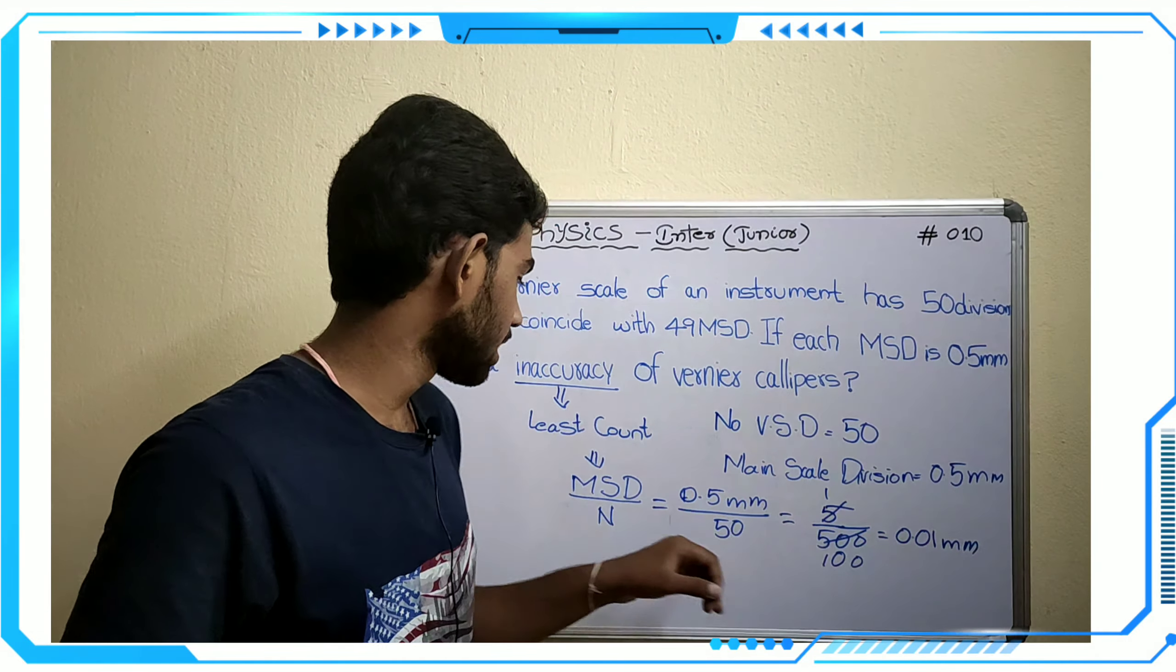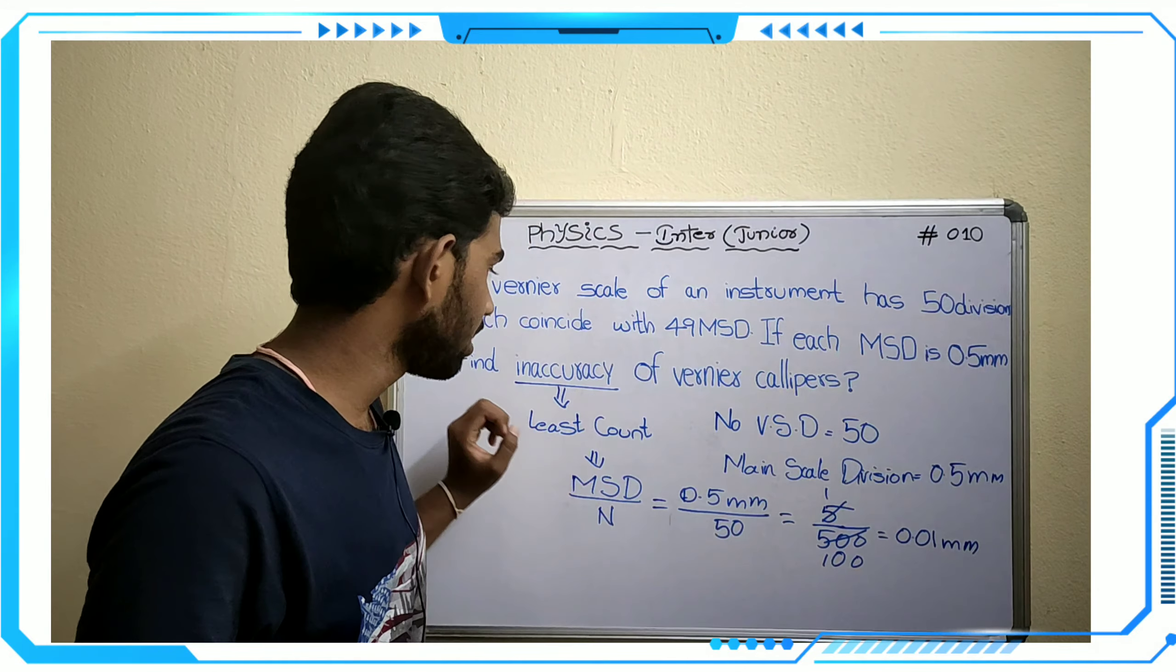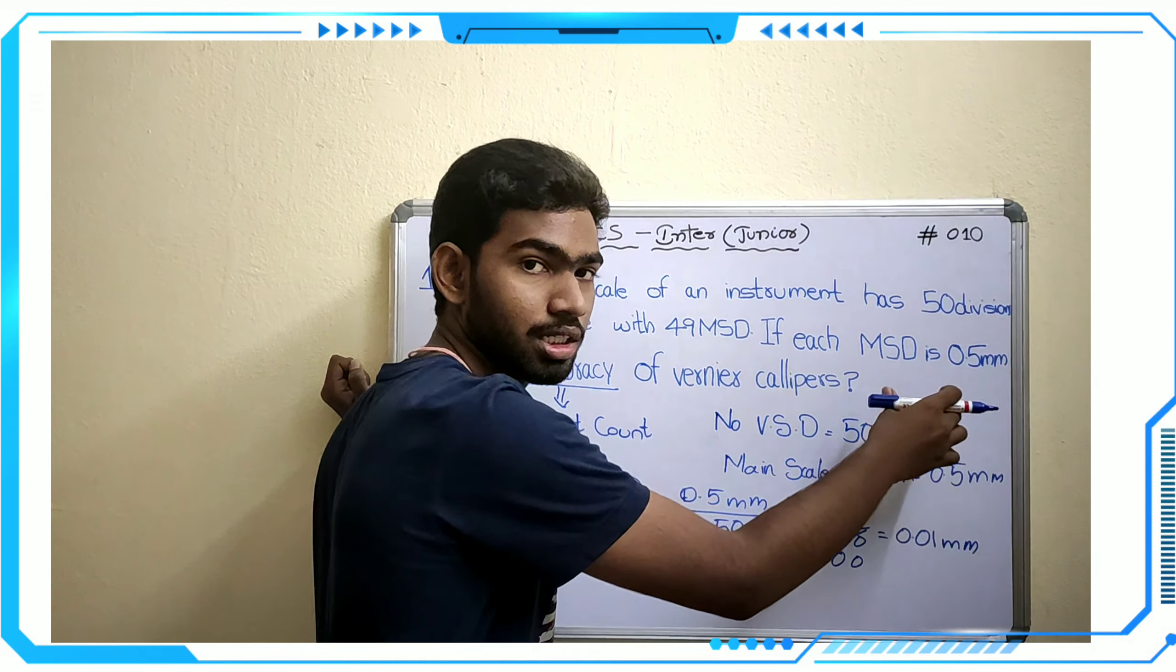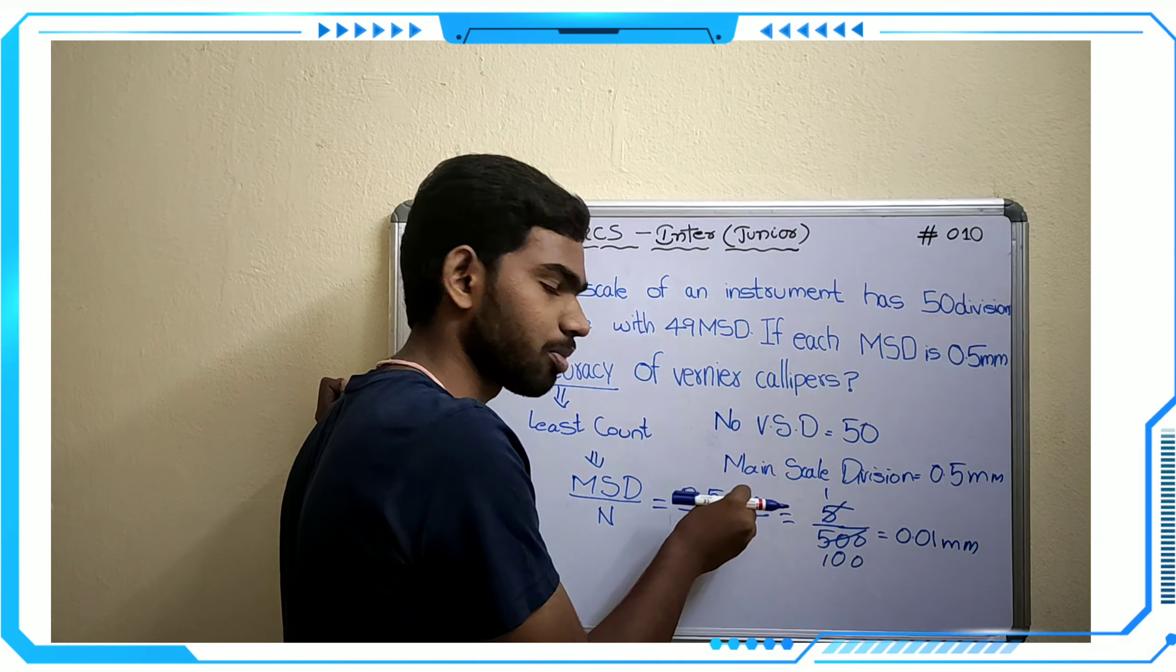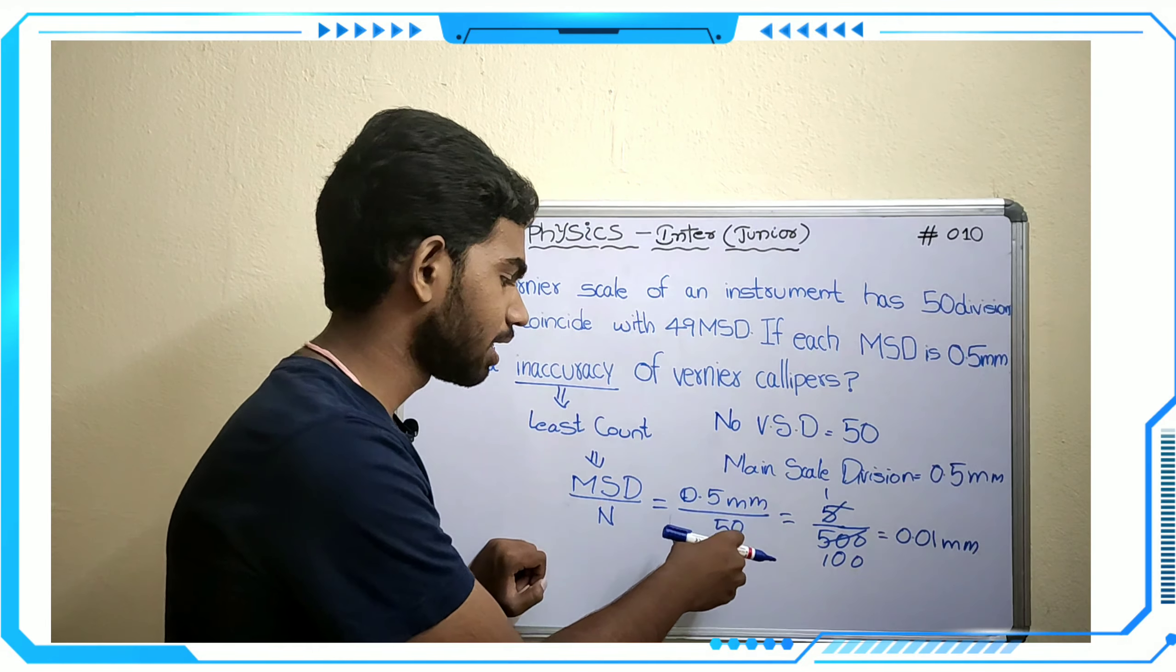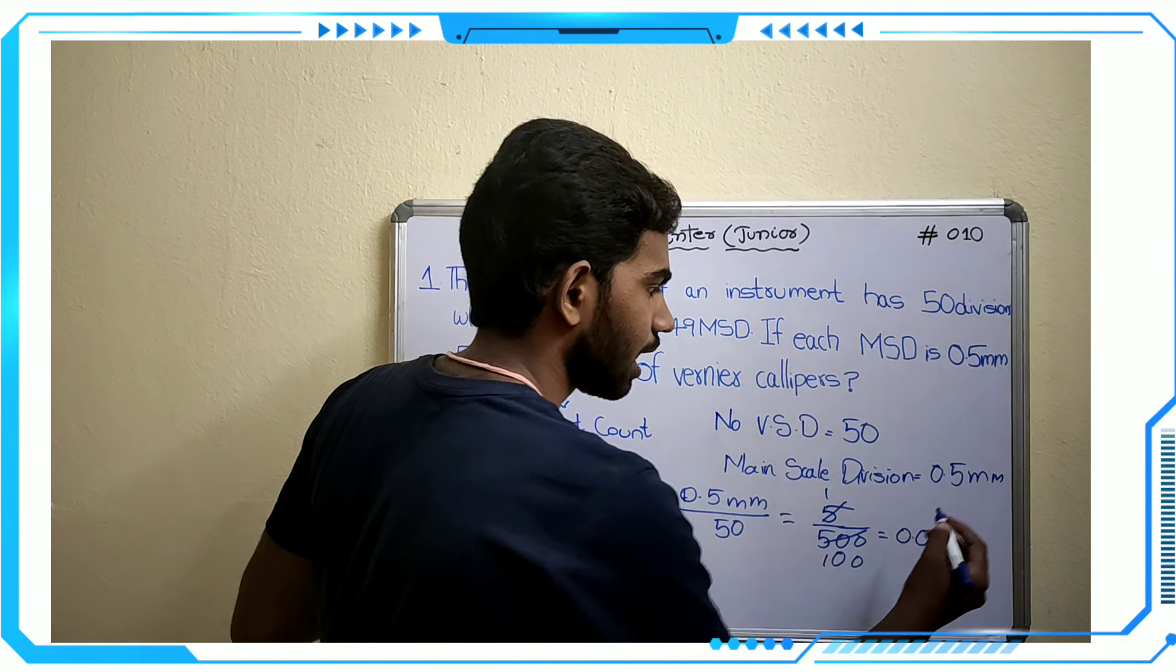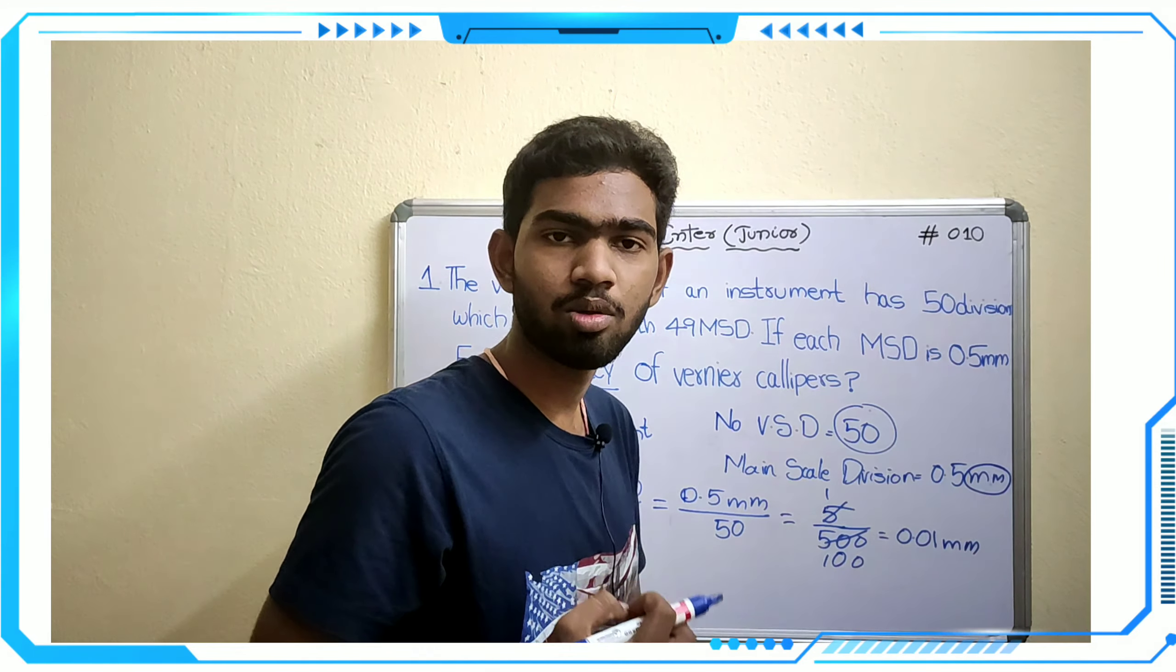So 0.01 millimeters is the minimum inaccuracy of vernier calipers. This is a simple problem. The main point to catch is that inaccuracy formula equals the least count formula, which is main scale division by number of vernier scale divisions. Substituting 0.5 millimeters by 50, multiplying by 10/10, we get 5 by 500, which equals 1 by 100, which is 0.01 millimeters.